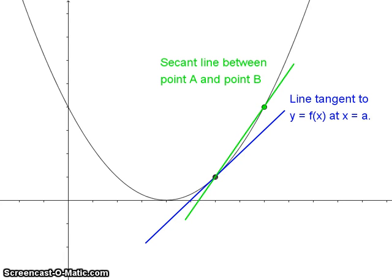Here's an example of how the secant line and the tangent line start to look like each other. I have two points on a curve and I'm going to draw the secant line between those two points. I also have the line tangent to the curve at that point.